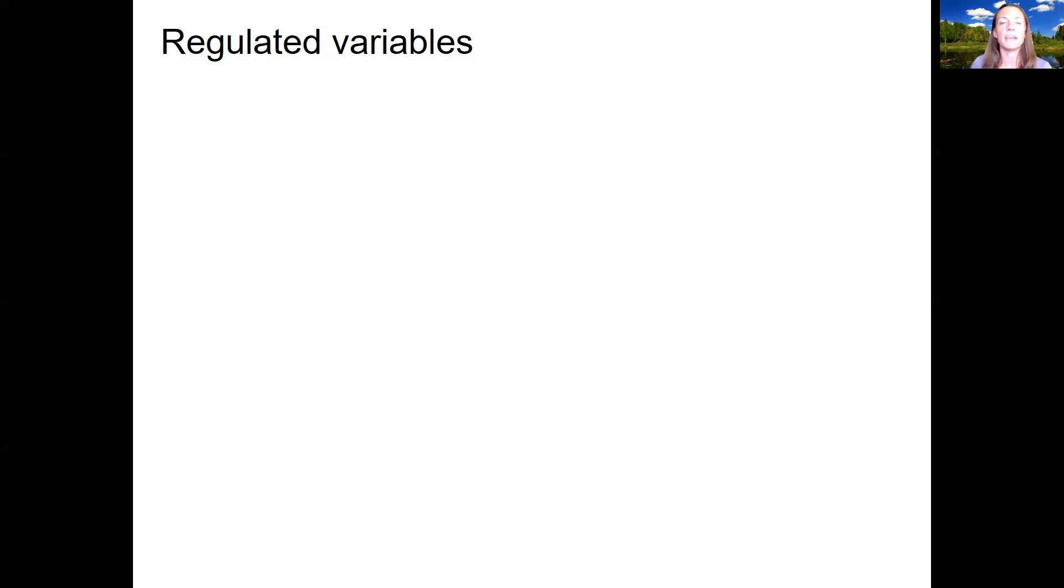So homeostasis refers to the maintenance in a range in all environmental conditions. Internal conditions are maintained in a narrow range despite the outside changing. So homeostasis literally means unchanging, but in reality, we've actually learned a lot that our bodies do change more than we think. It's a dynamic state. We'll go into this more next week.